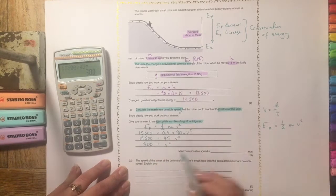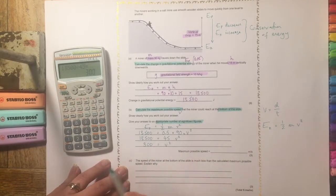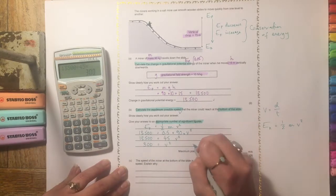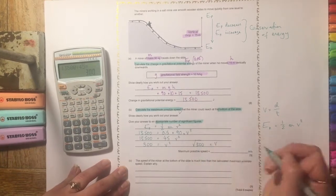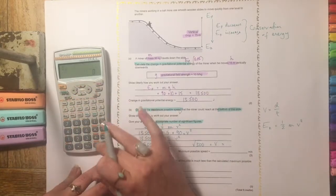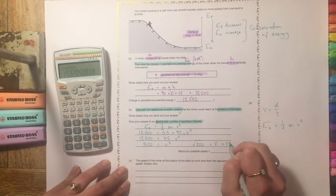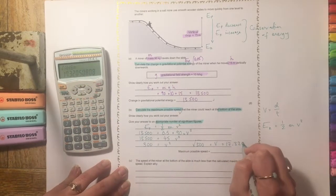But the question hasn't asked for v squared. The question has asked for v. So therefore if we want to do the square root, the square root of 300 is going to be equal to v. So if we just square root that then it gives us 17.32050.